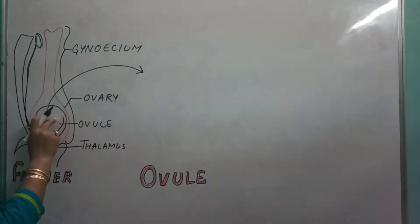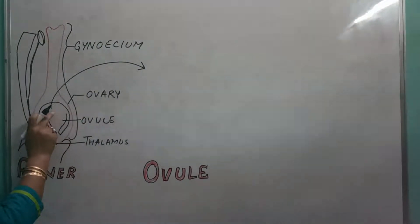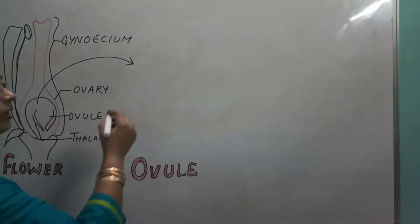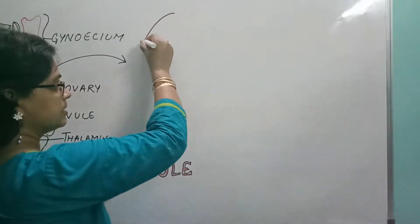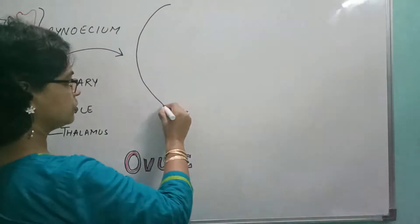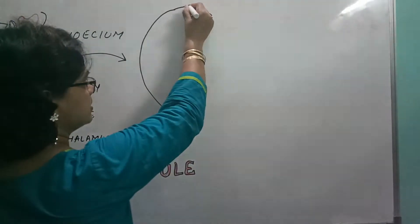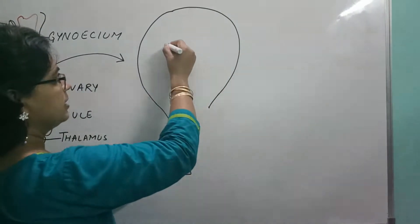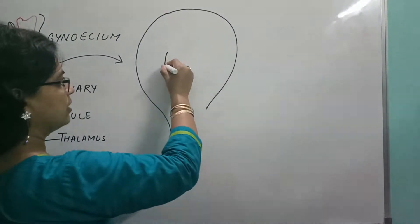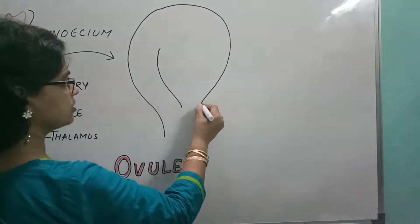So this is the part present inside the ovary, it is termed as ovule. Now in what way does the ovule look like? This ovule is like a structure in which the embryo sac is enclosed, and you can observe that it is surrounded by the protective coverings.